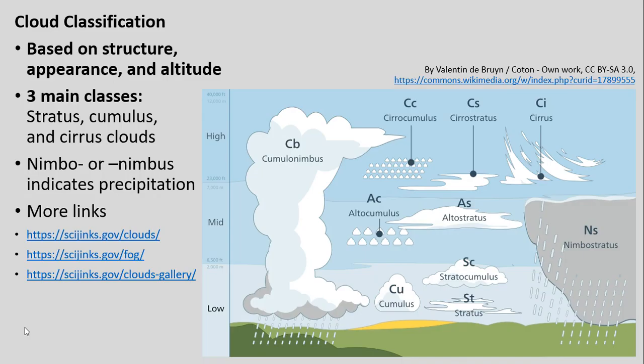This is going to be a very brief run-through of some different cloud classification types. I don't want you to focus too much on knowing the exact details of all the different types of clouds, but rather just recognize that how we designate or name them is really based on their structure, their appearance, and their altitude — what do they look like, what are they made of, and where are they in the atmosphere.